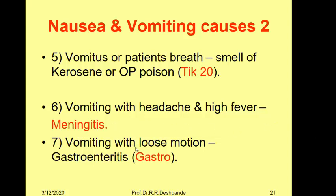In general medical practice, vomiting with loose motion is very common — we call it gastroenteritis, which is food poisoning involving inflammation of both the stomach and intestine. It is common especially during the rainy season in epidemics.